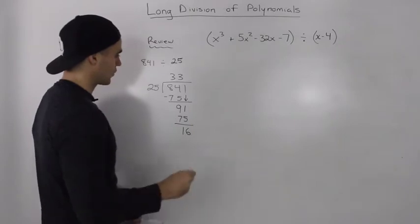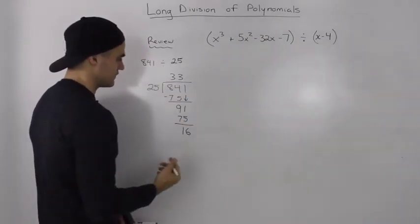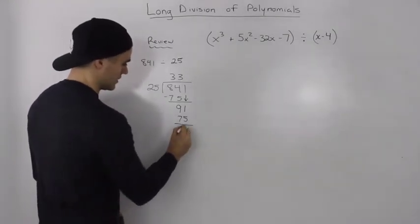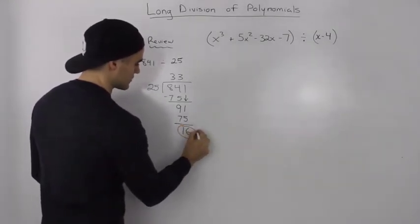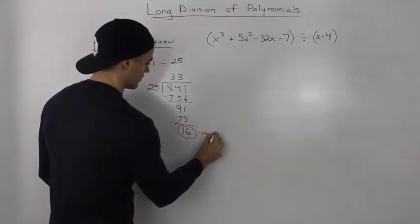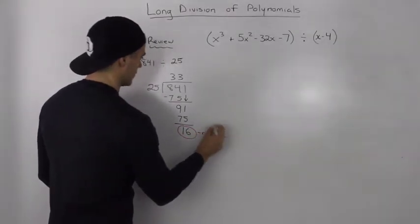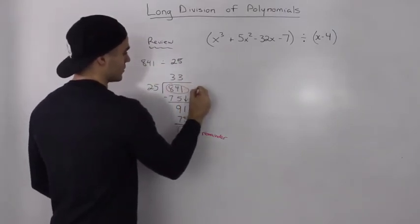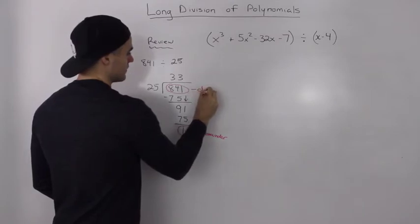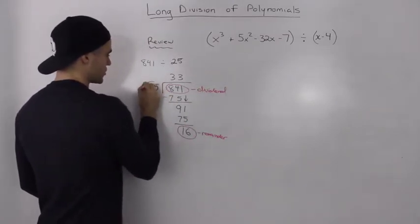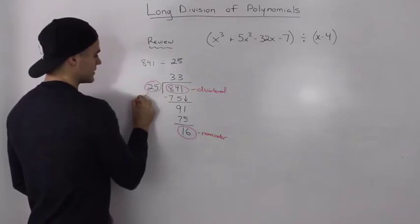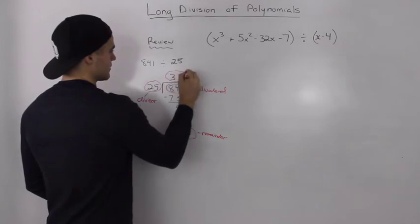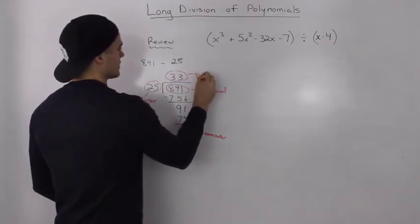I want to go over what each of these pieces is called in the division, because it's very important for this section — so make sure you write this down. This 16 is the remainder. This 841, the part that we're dividing, is always called the dividend. The part we're dividing by is called the divisor. And this 33, the result that we get, is called the quotient.